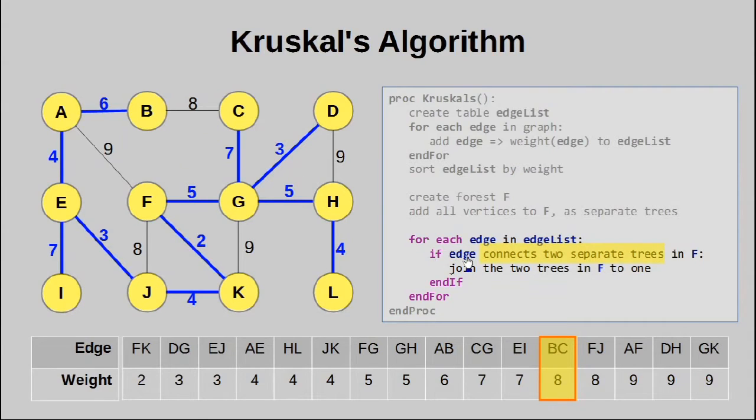So let's see what happens if we pick the edge BC. Now, the algorithm itself does not allow us to do this. As you can see, that edge needs to connect two separate trees. But all this is already one tree. So there is no way we can pick this edge. So the algorithm prevents us from doing it.